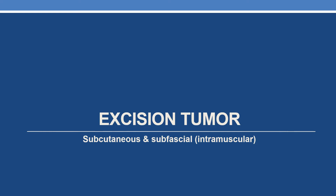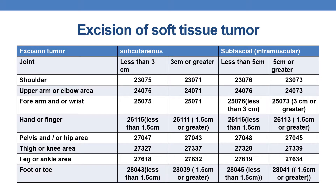Coming to excision of tumor. The CPTs are categorized into two types based on whether the tumor is subcutaneous or intramuscular. For subcutaneous tumors, they are further subcategorized based on the diameter — one CPT for less than 3 centimeters and another for 3 centimeters or greater. In some anatomical regions the diameter threshold is different, as discussed in the specific rows.